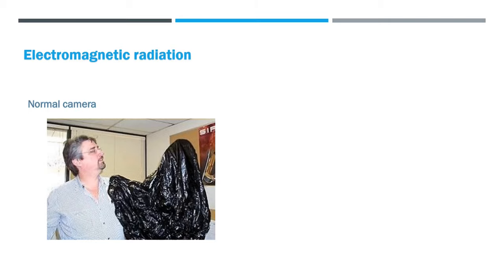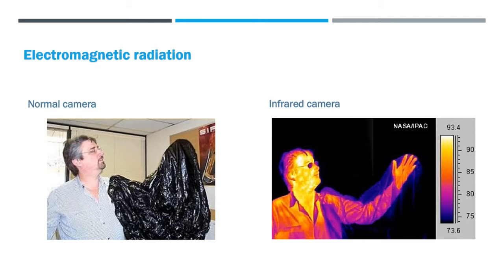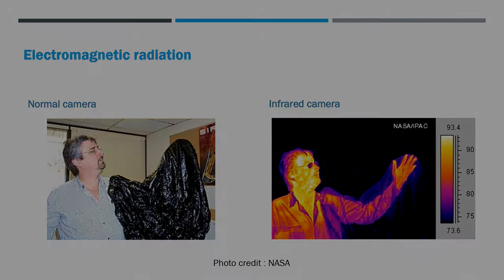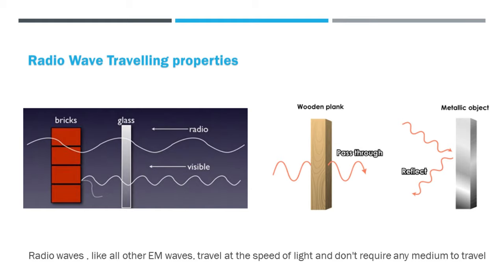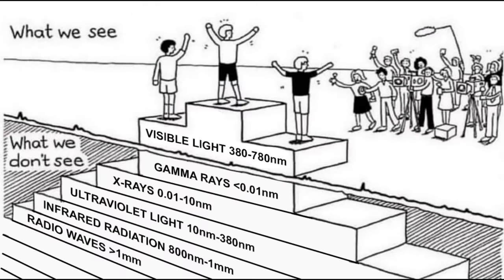NASA took two pictures of him holding a trash bag, one picture in visible light and another with an infrared camera. Similarly, radio waves can travel through bricks and plastics but are blocked by metallic objects.